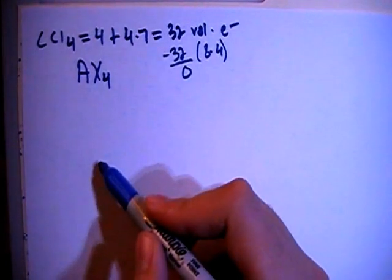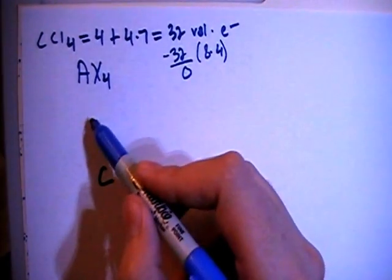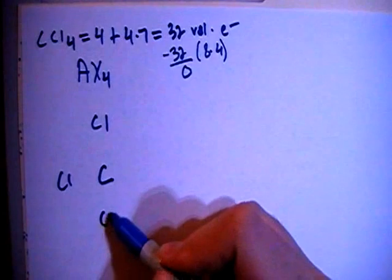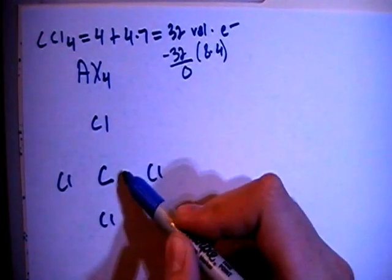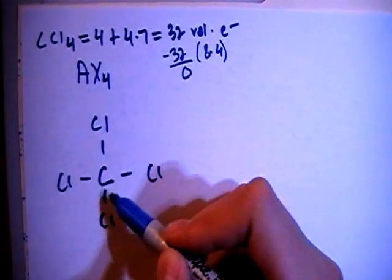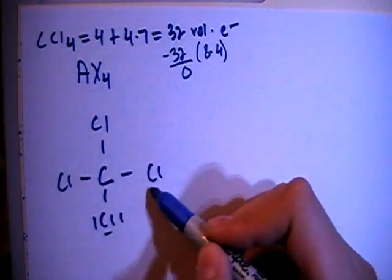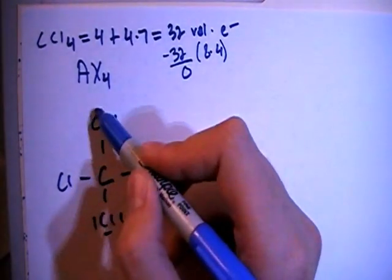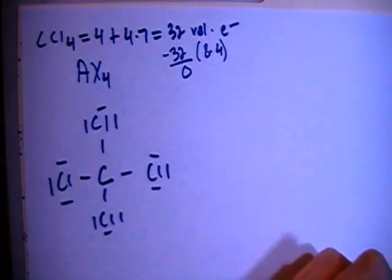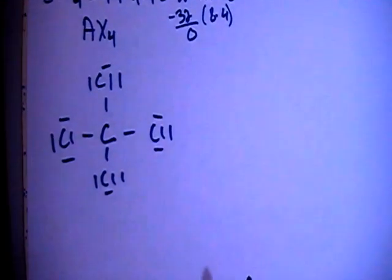So let's go ahead and draw this structure. We have the carbon in the center surrounded by the four chlorines. Let's single bond all of those, and then fill in the octets for each of the surrounding chlorine atoms. That looks like our structure.